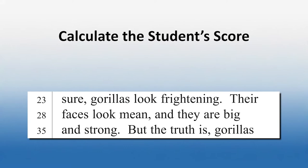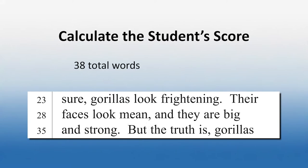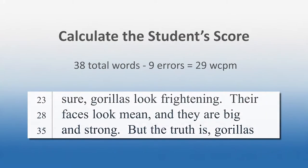Christopher read up to the word "but," which is word number 38. He made nine errors, so he read 29 words correctly in a minute. Now listen to Christopher read the same passage again as we mark his errors together. Did you identify the same errors as his teacher?